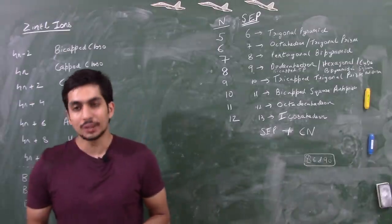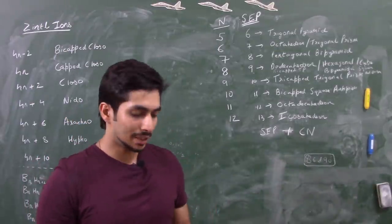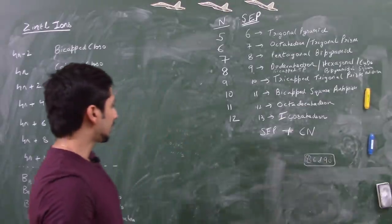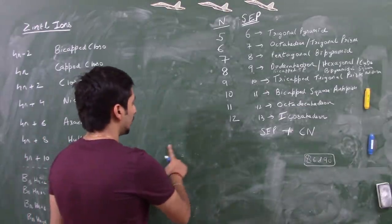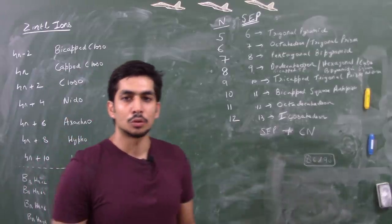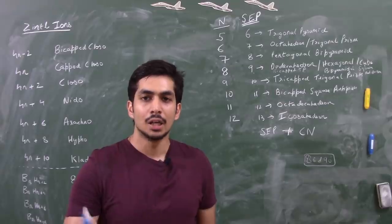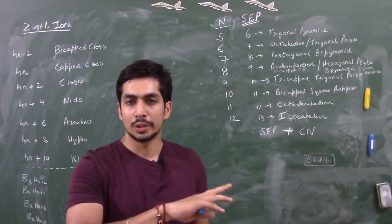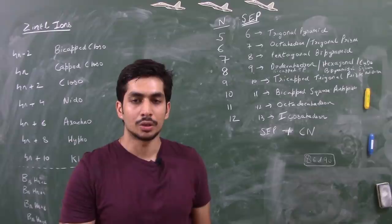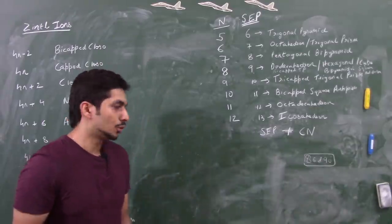Let's begin with the easy examples. Before that, if you don't know how to find the number of metal-metal bonds and how with that number you can also find the geometry of the molecule, I've given links for both those videos. I'll give one simple example of how to find the number of metal-metal bonds.